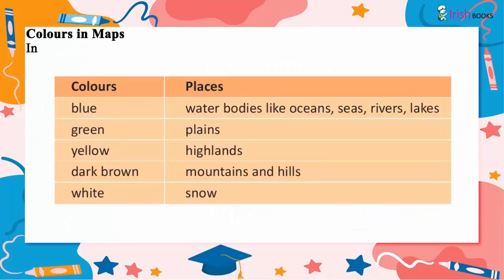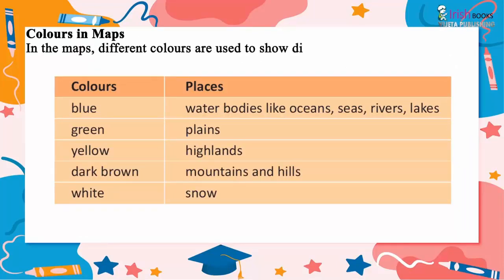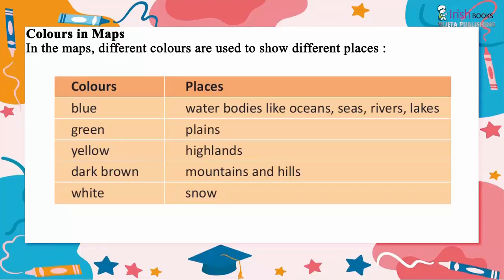Colors in maps. Different colors are used to show different places. Blue represents water bodies like oceans, seas, rivers and lakes. Green represents plains. Yellow represents highlands. Dark brown represents mountains and hills. White represents snow.